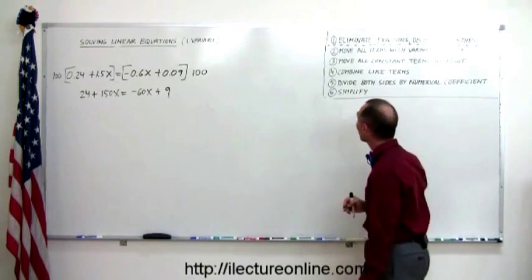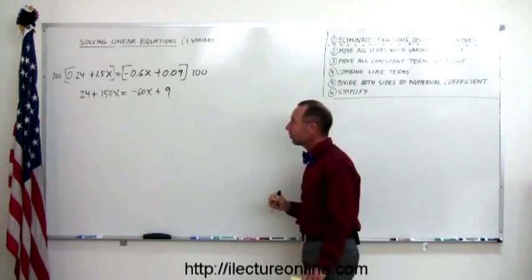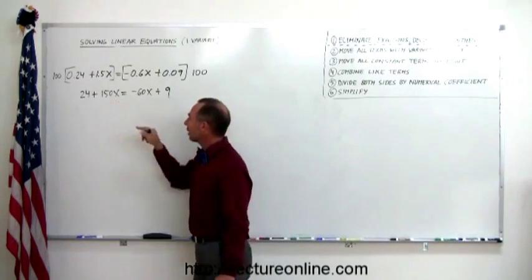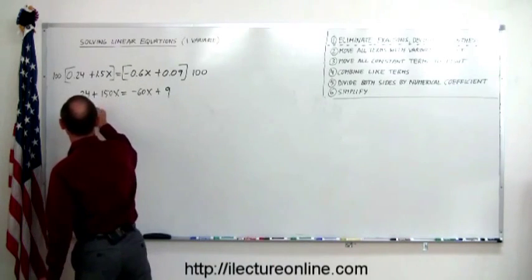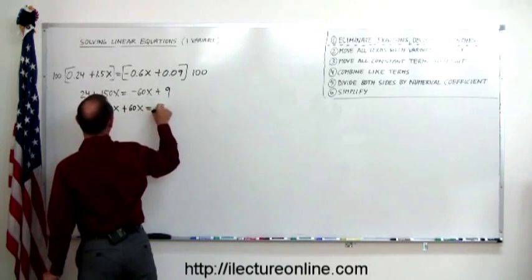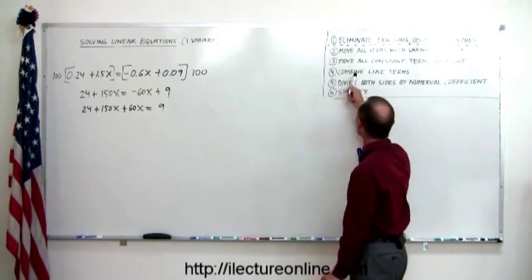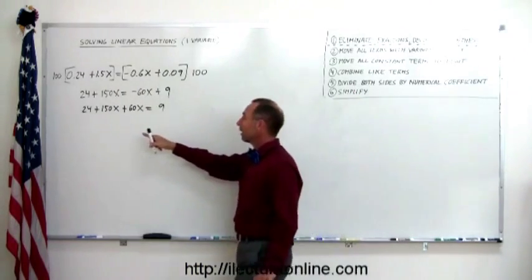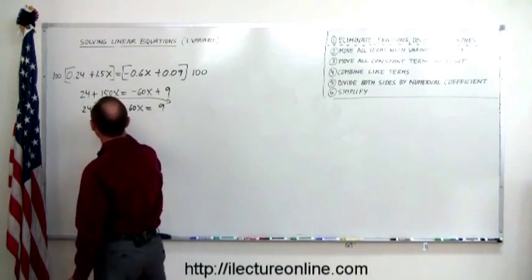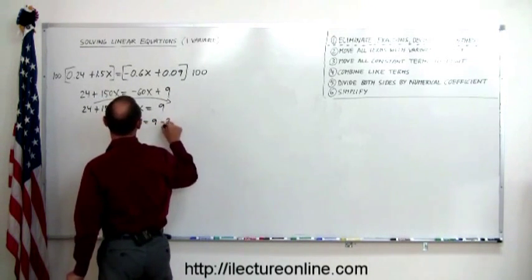At that point, now again, you have an equation that looks just like the others. You start with the next five steps. Move all the terms with the variable to the left. So the minus 60 goes to the left. It becomes a plus 60. So 24 plus 150x plus 60x equals the 9 stays behind on the right side. Next, we move all the constants to the right. So we have one left that needs to move to the right. So this 24 needs to go over here. We have 150x plus 60x equals 9 minus 24.